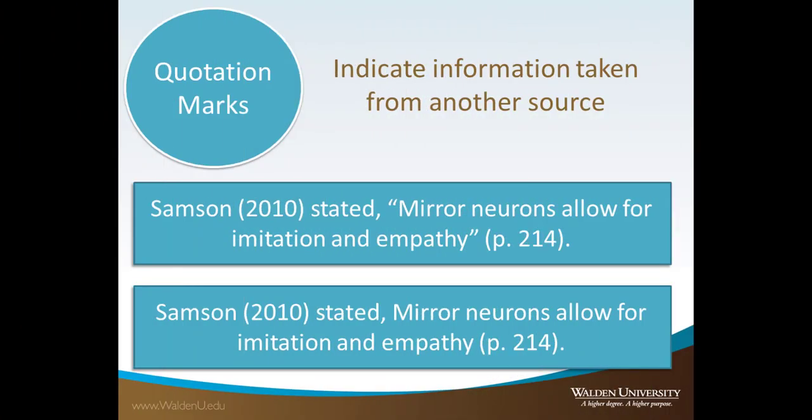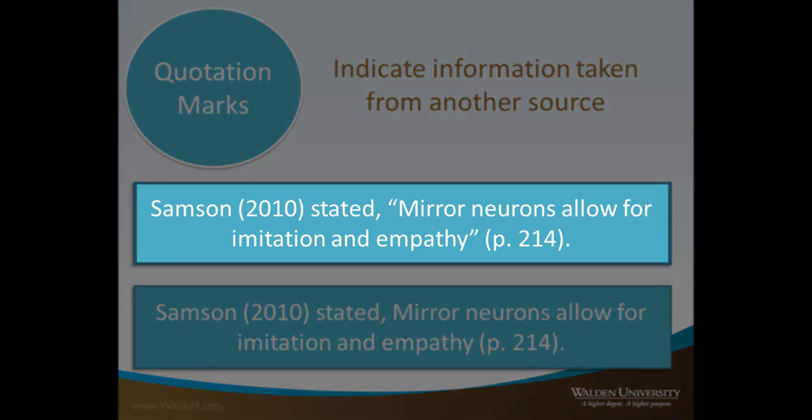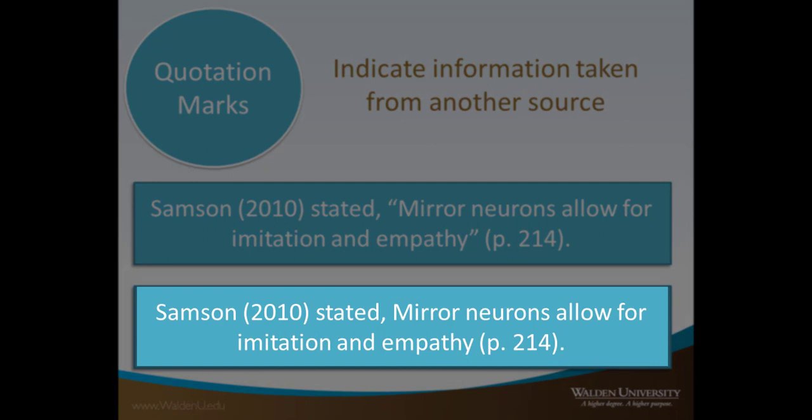Quotation marks indicate information taken from another source. This example is correct because Samson's wording is in quotation marks, showing the reader that it is a direct quote. This example is incorrect because the quotation marks are missing, so the reader wouldn't know this wording is from Samson.